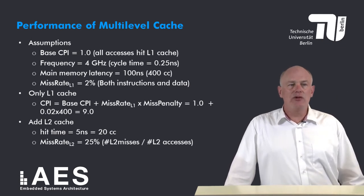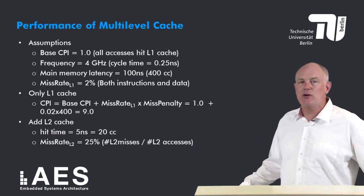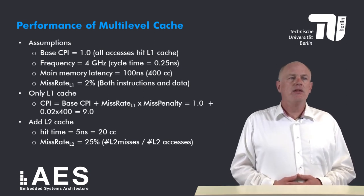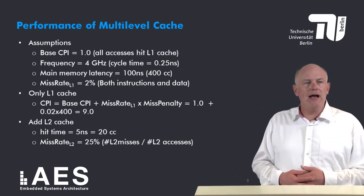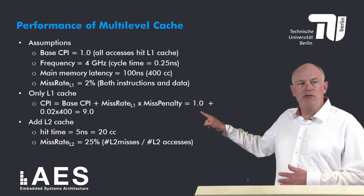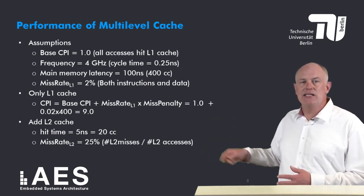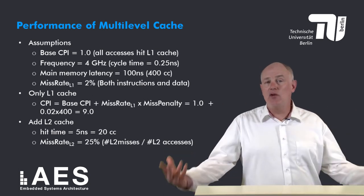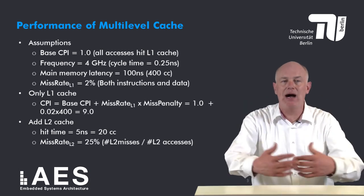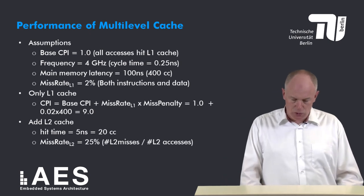Now I will add a level 2 cache. It has a hit time of 5 nanoseconds, which is 20 processor cycles. The miss rate of L2 is 25%, which is the number of misses in the level 2 cache divided by the number of accesses to the level 2 cache. This rate is relatively high because most accesses will not pass through the level 1 cache — the L1 cache has already exploited most of the locality.